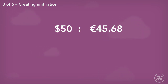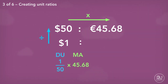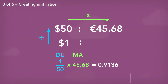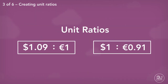We lay out our information in a similar way again, but finding what $1 is worth. We divide up and multiply across: 1 divided by 50, multiplied by 45.68, gives us 0.9136. Therefore approximately €0.91 is equal to $1. We have now created unit ratios for the conversion of dollars to euros and vice versa.